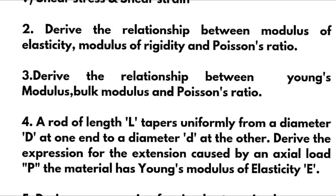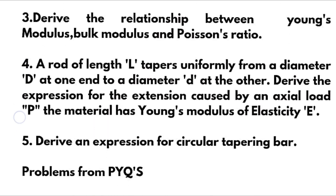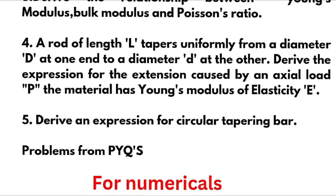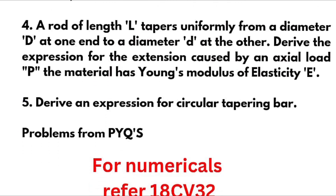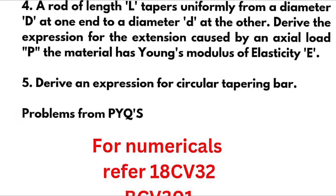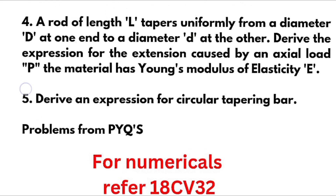Next, we have: a rod of length L tapers uniformly from diameter D at one end to diameter d at the other — derive the expression for the extension caused by an axial load P, given the material has Young's modulus E. This is the derivation for the tapered bar. Next, derive an expression for a circular tapering bar. These are the five important theoretical concepts or derivations in Module 1. For problems, you have to go through tapered bar problems, which are easier ones.